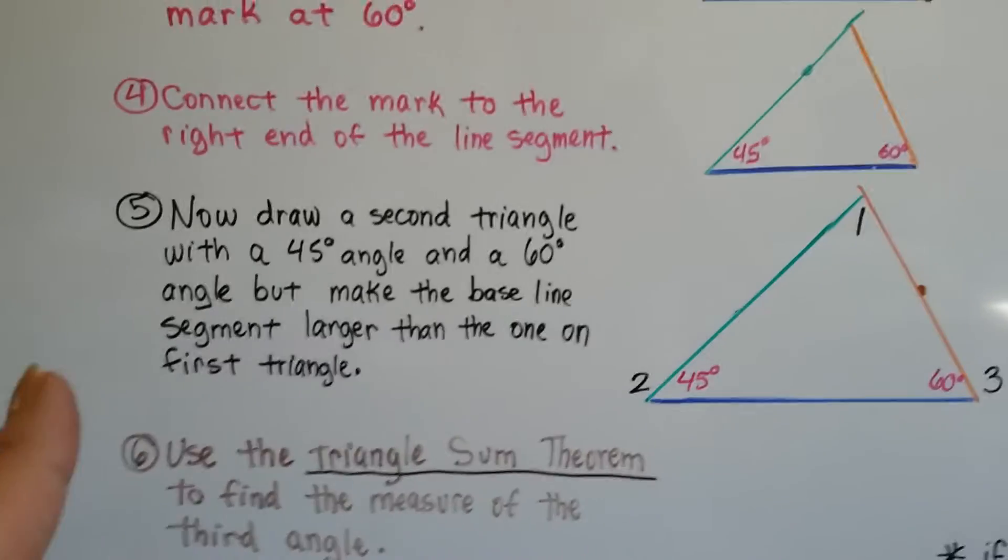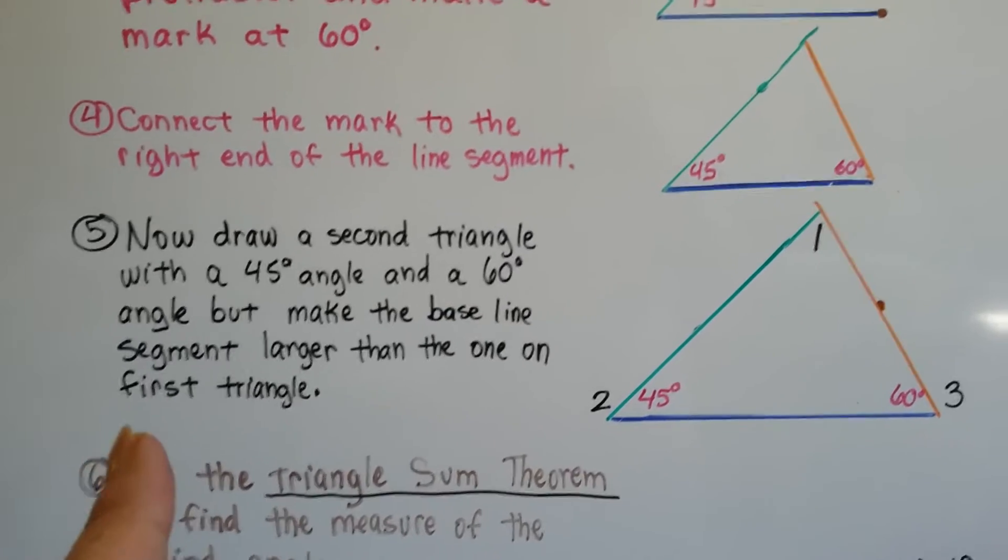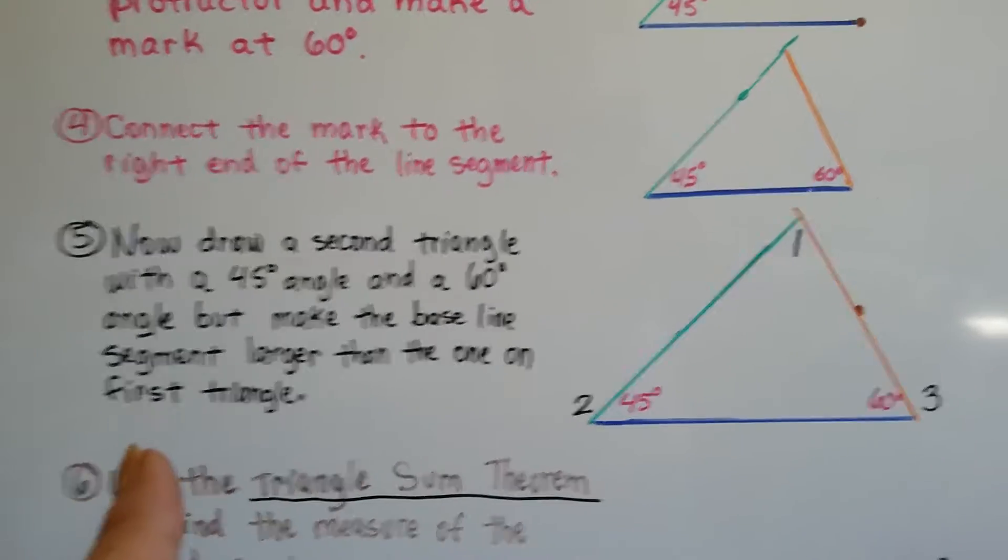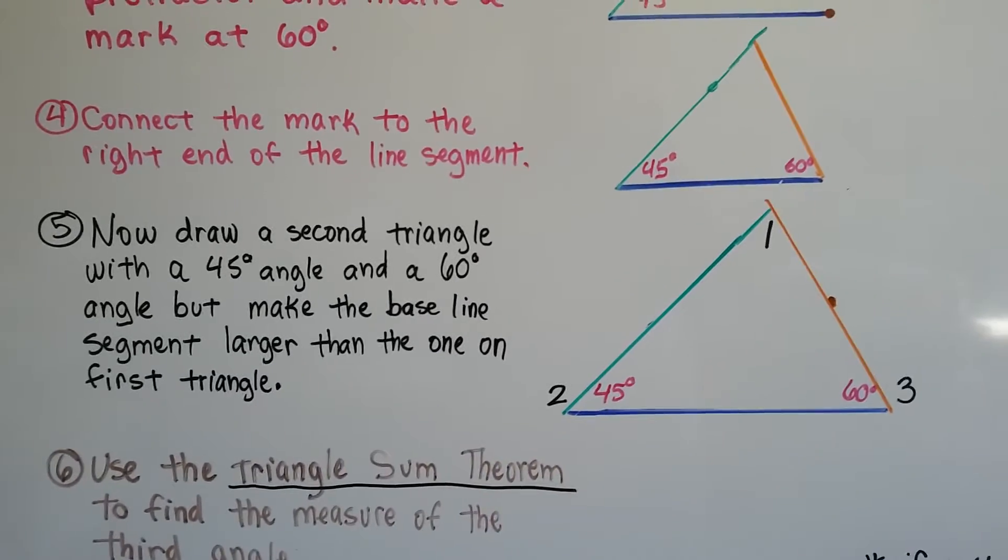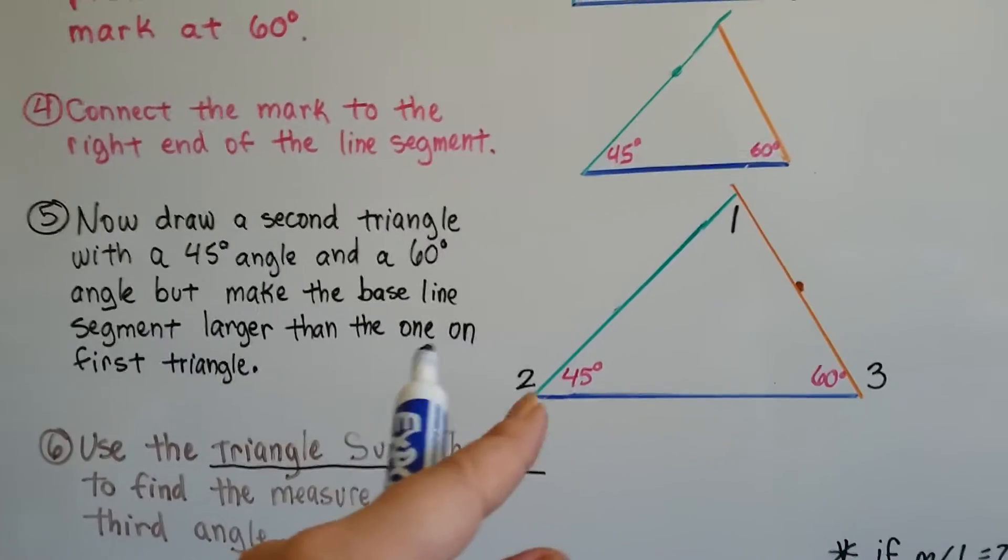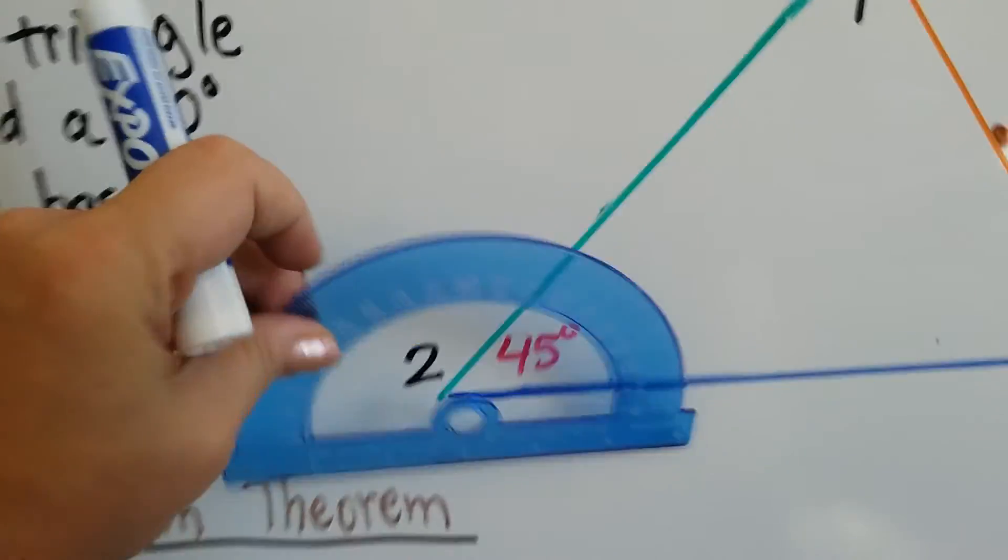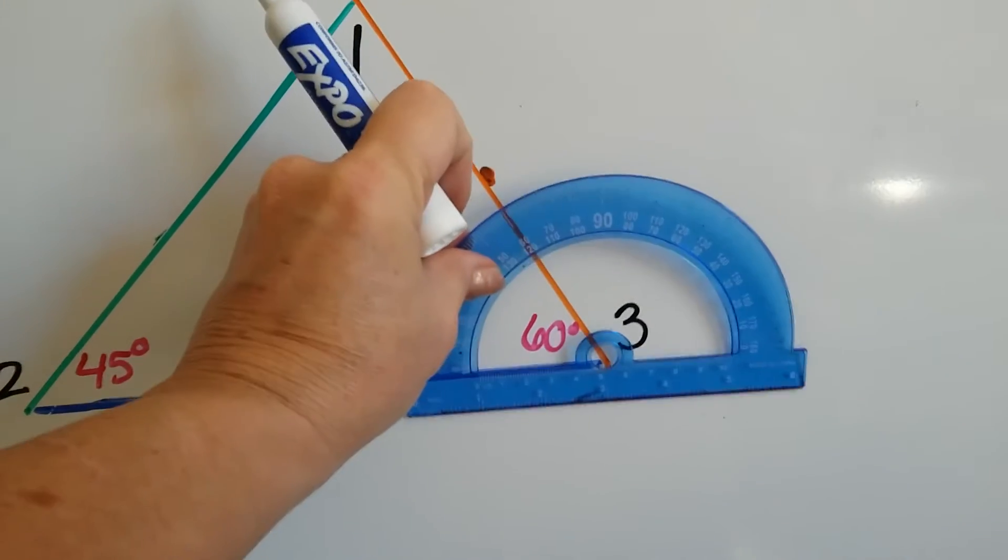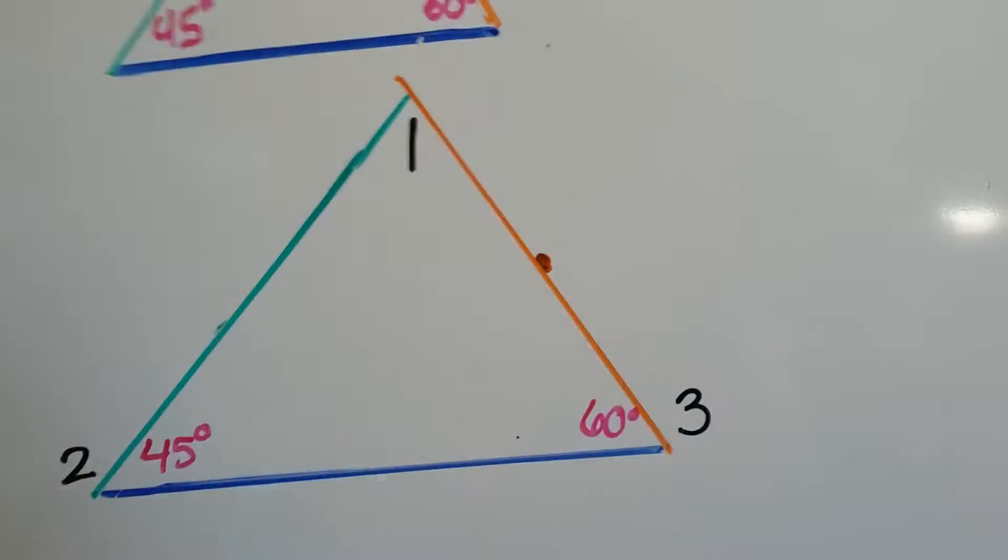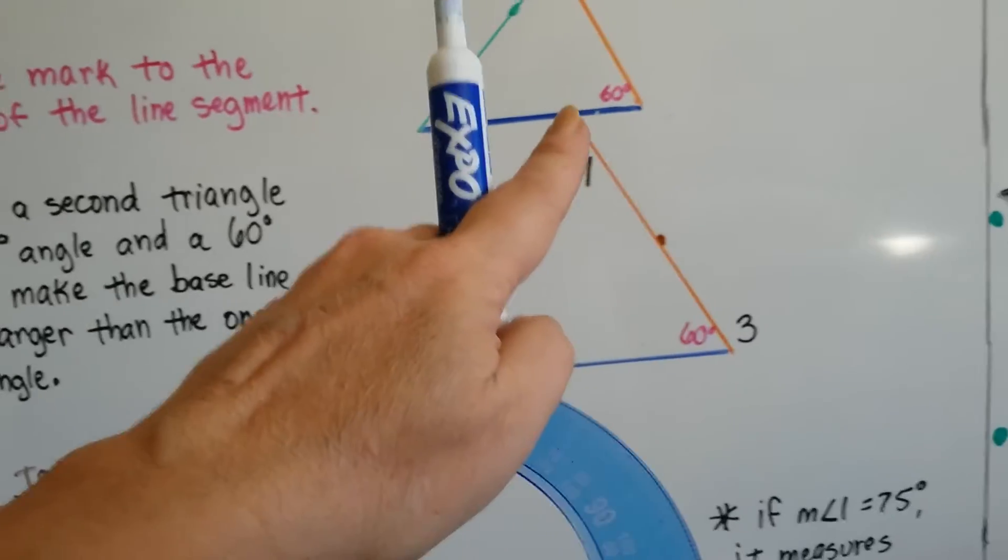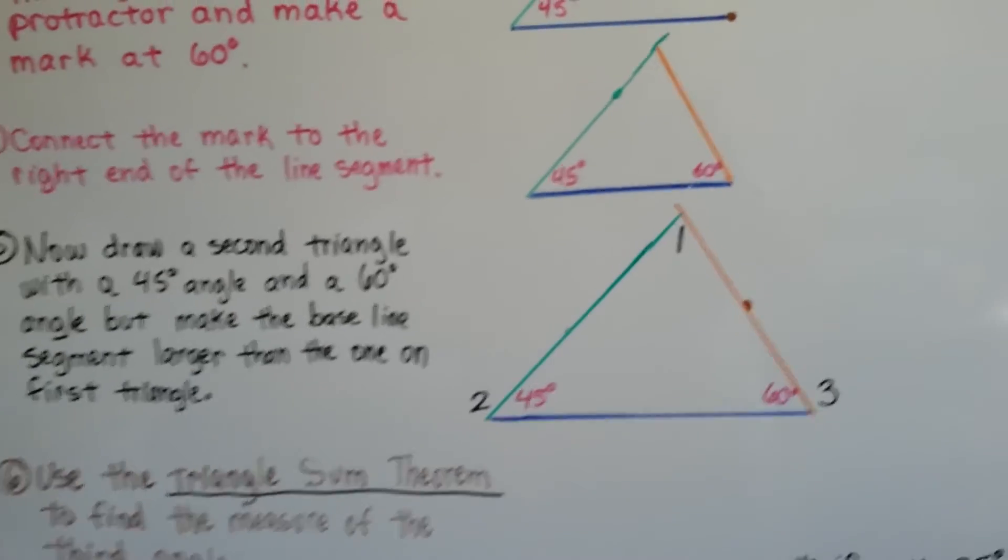Now what you need to do is draw a second triangle with a 45-degree angle and a 60-degree angle, but make the baseline segment larger than the one on the first triangle. So this one was 6, and I made this one 9. And I did the same thing. I lined this up, and I put a mark where 45 degrees was. I lined this up on this side and put a mark where the 60 degrees were, and I connected the lines. Now I've got similar triangles.